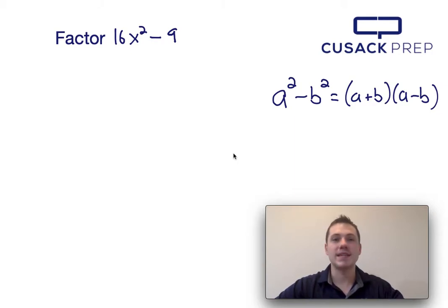Now when I see 16x squared minus 9, the first thing I notice is that both 16x squared and 9 are perfect squares. Now because I'm taking the difference between two perfect squares, I know that I can factor this using the difference of squares formula, which I have presented over here on the right-hand side.